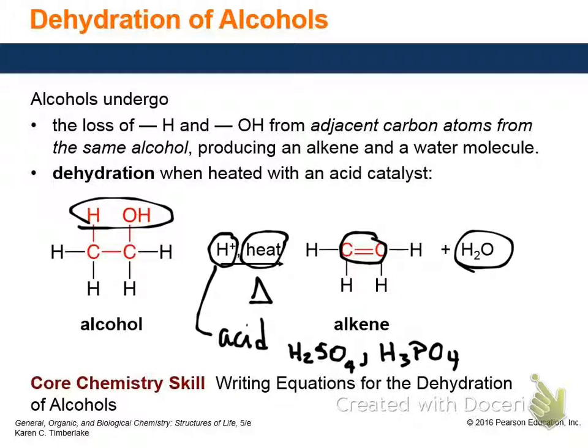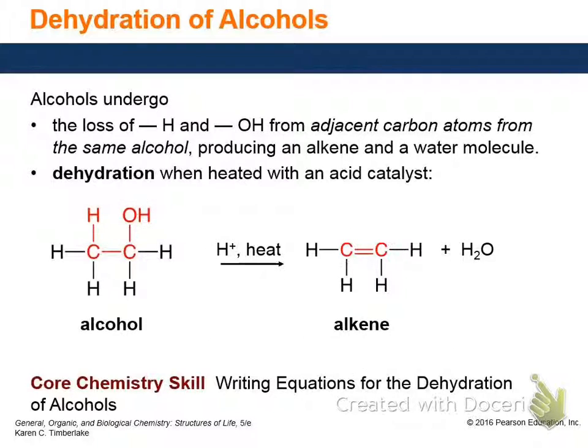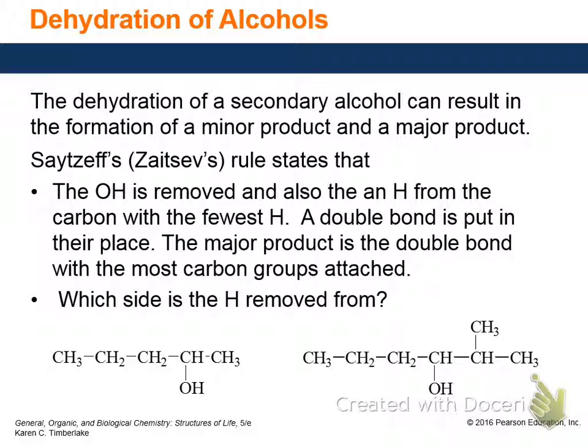Let's write a dehydration reaction. The molecule is 2-pentanol. I'm going to draw 2-pentanol out. There are actually two possible products, and we'll look at Zaitsev's rule to figure out what that's saying.